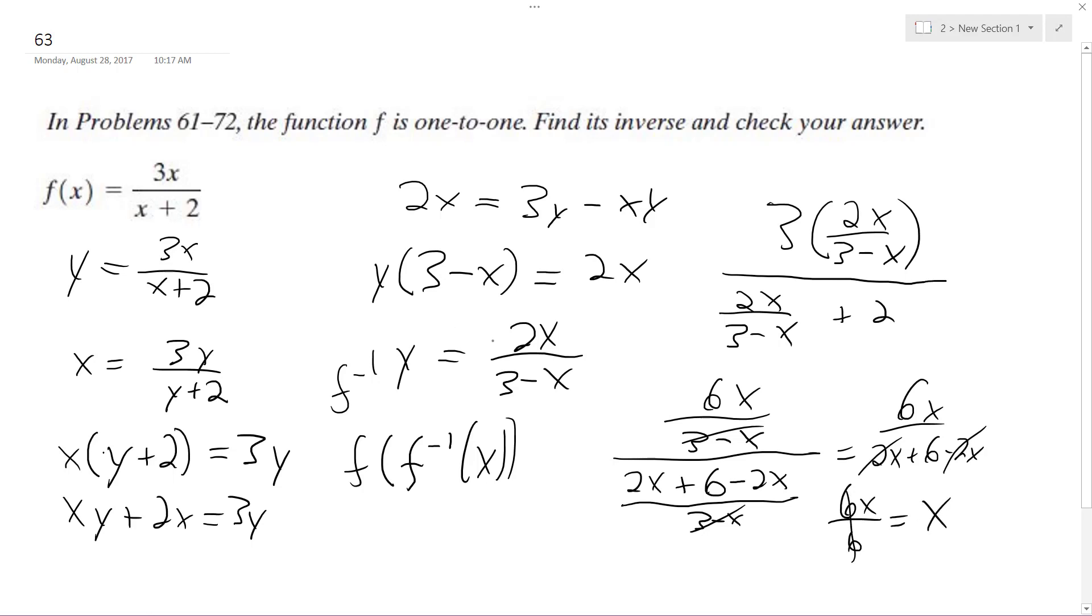So that proves it. So here's our inverse, which is 2x over 3 minus x, and then we get all this equal to x. That's it.